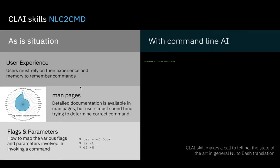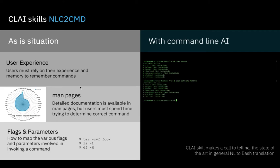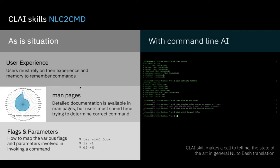We will now dive a bit deeper into a few Clay skills. First up, the NLC to CMD skill, which converts a user's natural language invocation or goal into a command that can be executed on the terminal. Currently, this skill makes a call to the Telina tool, which is the state of the art in general natural language to bash translation. The NeurIPS NLC to CMD challenge seeks to establish a better baseline and to collect new and challenging data to beat the current state of the art.